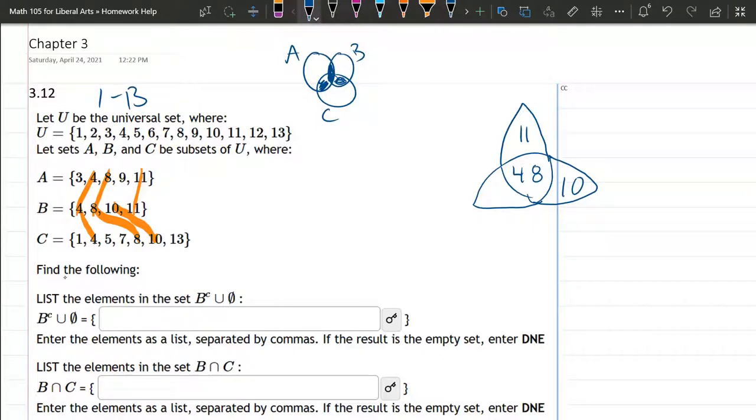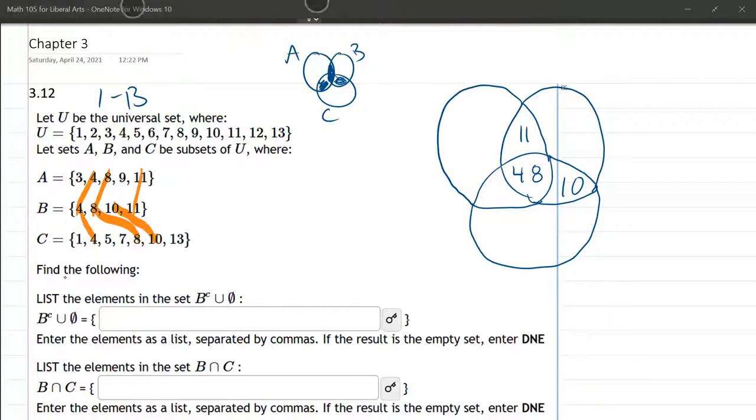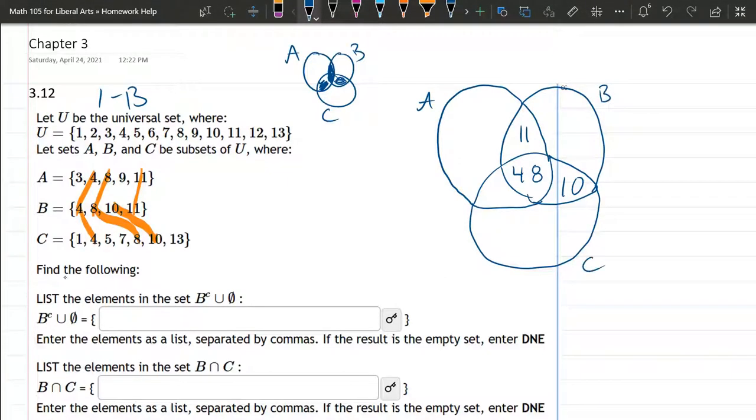Now we're going to draw the rest of these circles out. There's not that many elements, our circles don't need to be that big. And we have A, B, C. So the elements in A that are not in B or C are 3 and 9. So we have a 3 and a 9. B has got nothing else in there, so there's nothing else inside B.